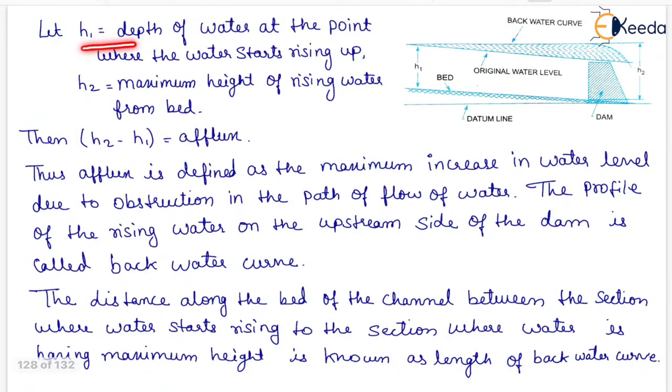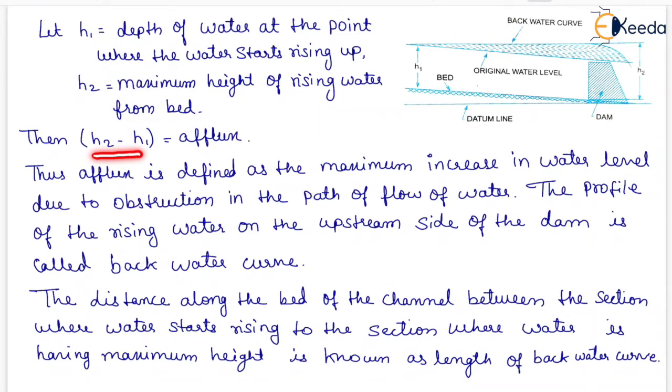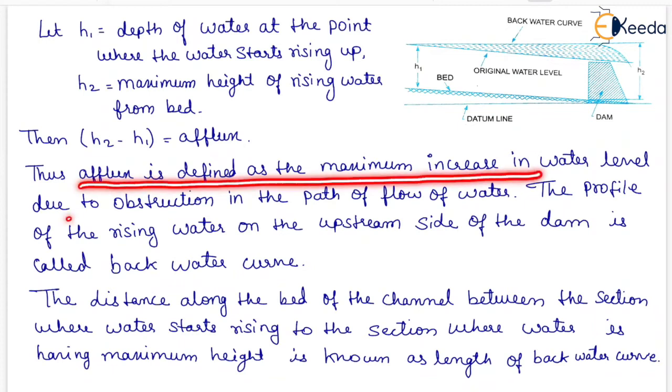Let h1 is the depth of water at the point where the water starts rising up which is shown here, and h2 is the maximum height of rising water from bed which is shown here. Then h2 minus h1 will be afflux. Thus, afflux is defined as the maximum increase in water level due to obstruction in the path of flow of water.